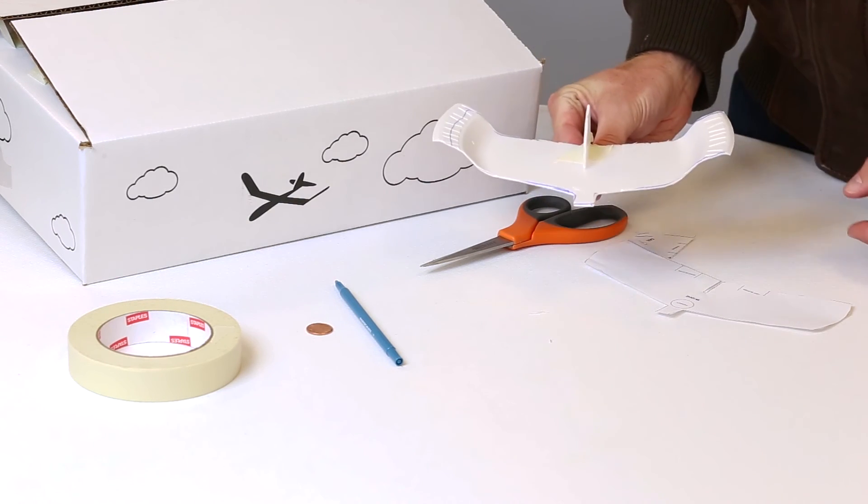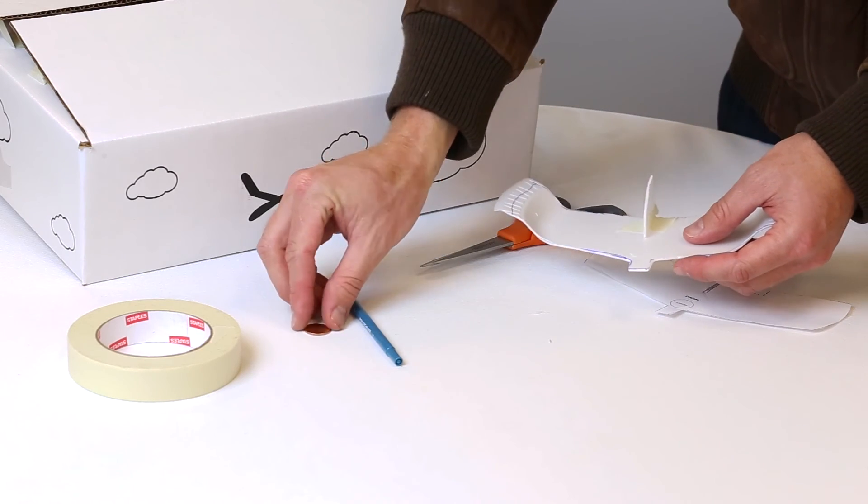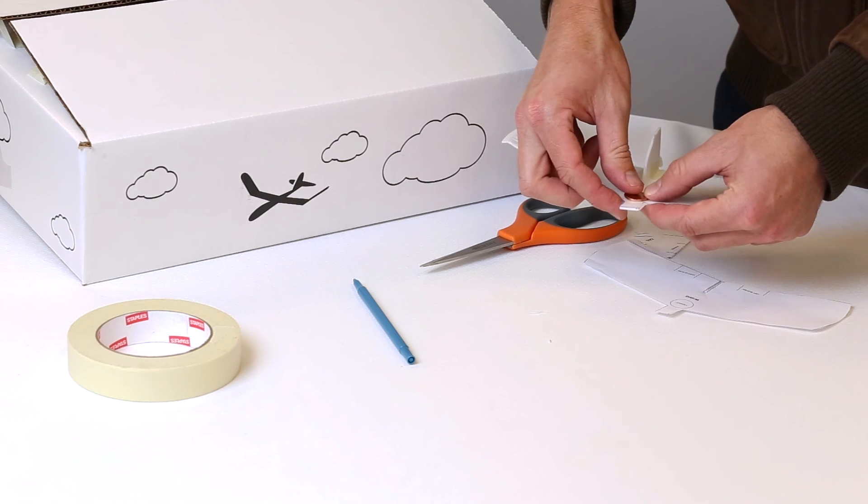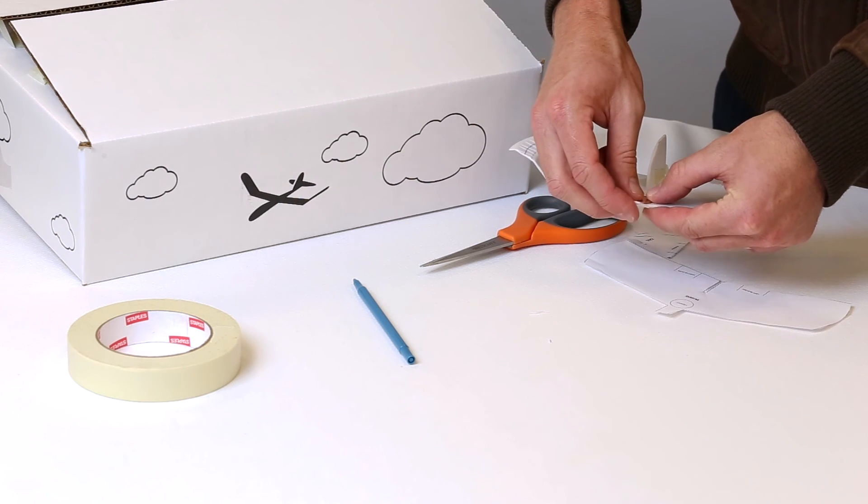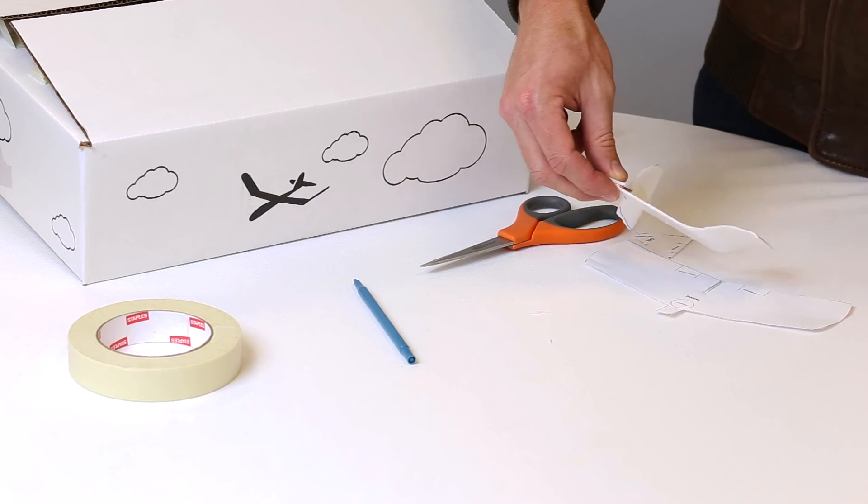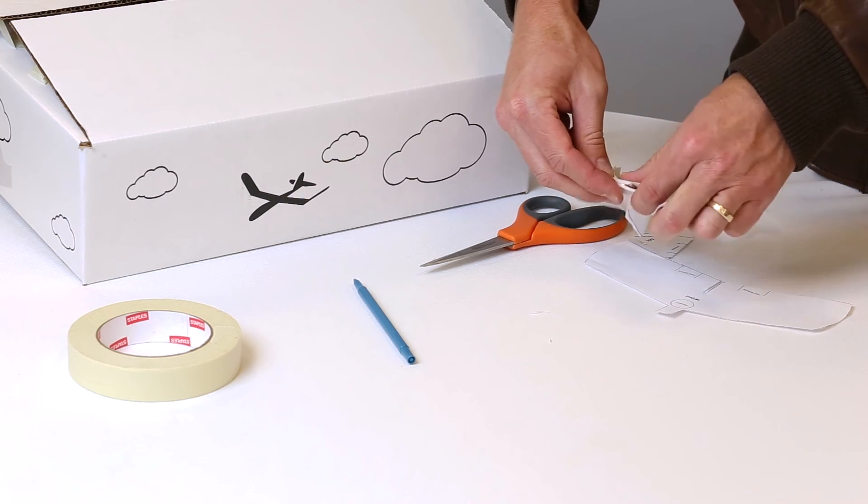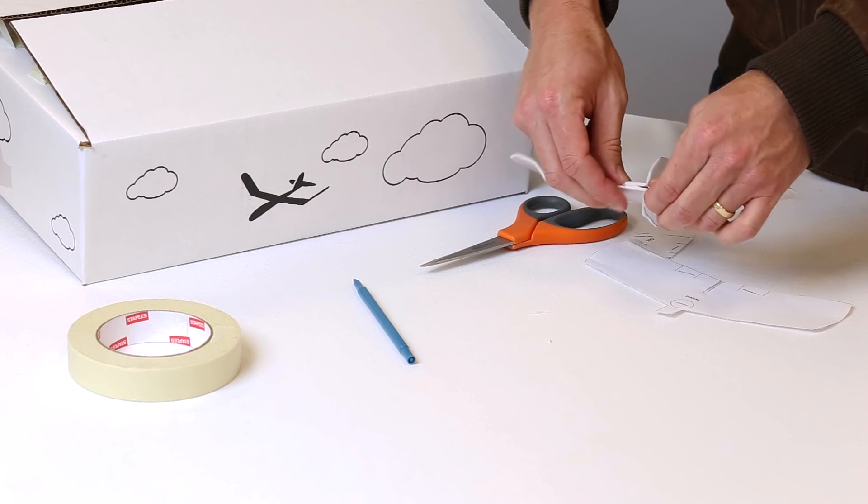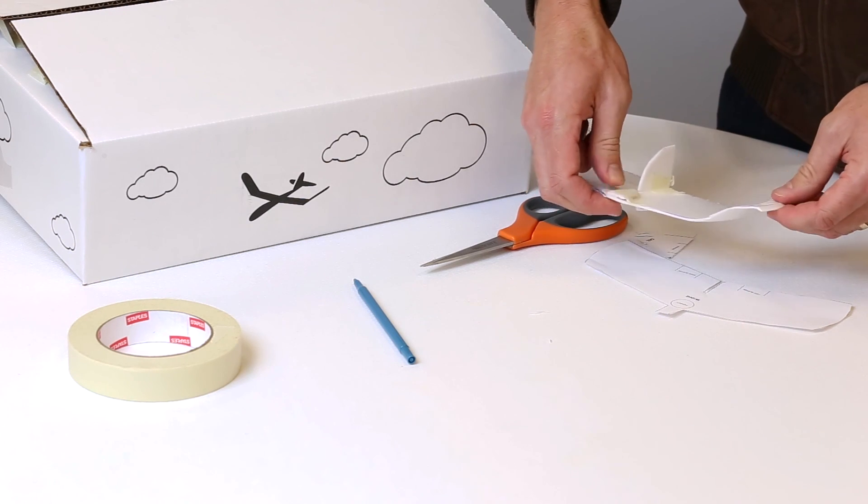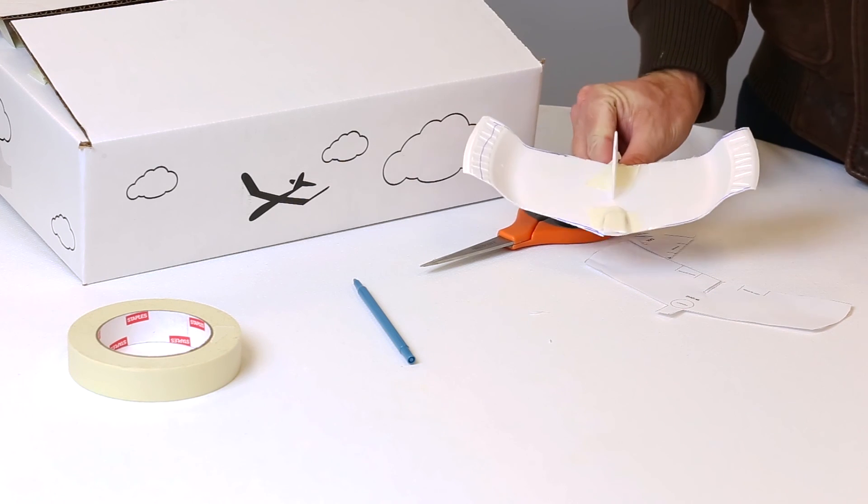Once the tail is secure you can take a penny to add some weight on the front of the plane to help with flight by placing the penny over here and securing it on the top of the wing with a piece of tape. Now it's time to fly your glider. Remember, use your elevons and your rudder to control the flight path of your plane.